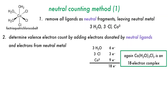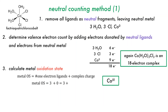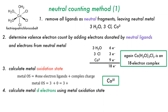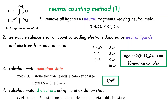Cobalt is treated as a neutral atom and, being in the ninth column of the periodic table, natively brings 9 electrons, giving a total of 18 electrons — the same result as the donor pair method, reached more quickly. However, the oxidation state of cobalt is not zero. To determine it, we add the number of one-electron donors to any charge on the complex: there are three one-electron donor ligands and no overall charge, giving a +3 oxidation state. The d electron count follows as before: cobalt is d6.